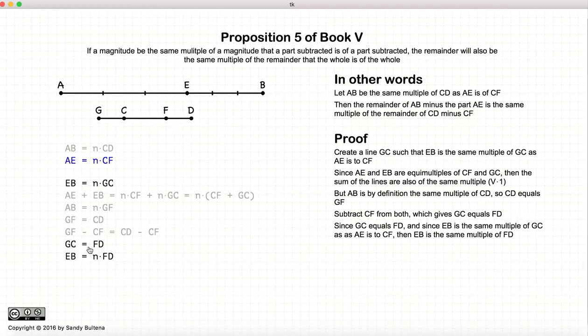Now GC equals FD and EB is the same multiple of GC as AE is of CF. We have that EB is the same multiple of FD as AE is of CF. So to state this a little clearer, AE and EB are equal multiples of CF and FD.